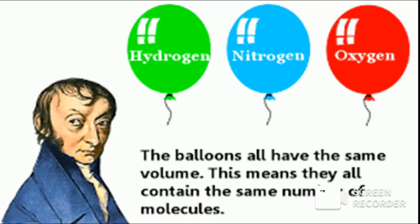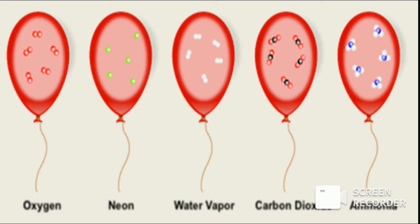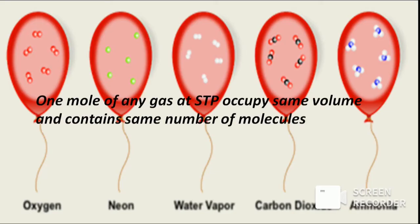Three balloons are filled with hydrogen, nitrogen, and oxygen gases. The balloons all have the same volume. This means they all contain the same number of molecules. One mole of any gas at STP occupies the same volume and contains the same number of molecules.